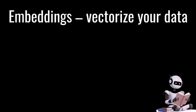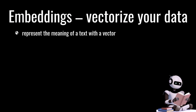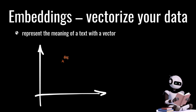Embeddings - what are embeddings? What is vectorization and why do we need it? It's a cool concept where we take a text or a word and represent the meaning of that text or word with a vector. Here's a simple vector with two dimensions: an X value and a Y value shown in a plot. For the word 'dog' we have one vector, for 'cat' another vector. Bring in a third word - 'Labrador' - and now we can calculate the distance between those words.